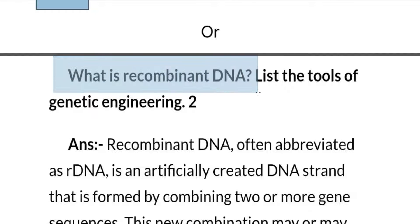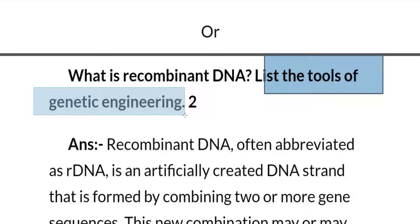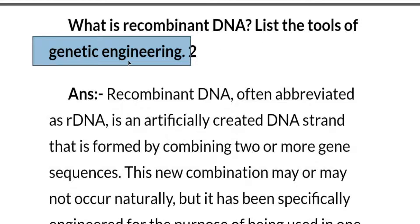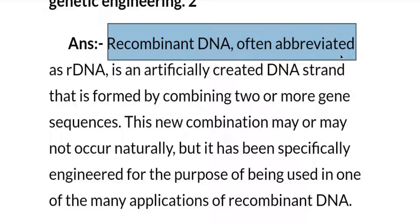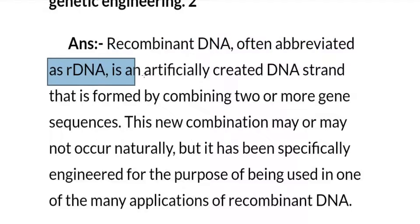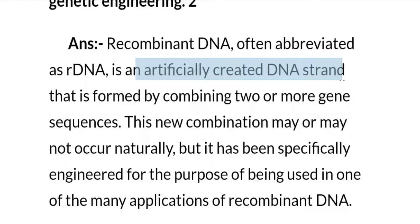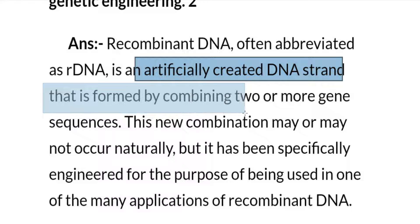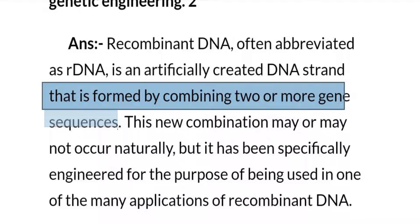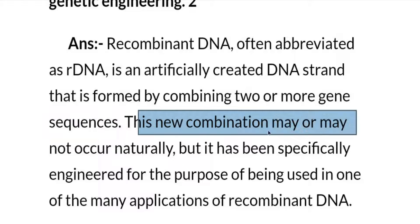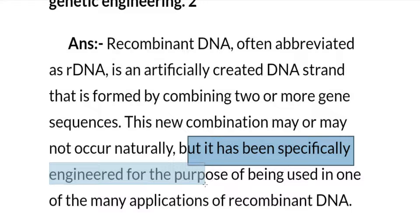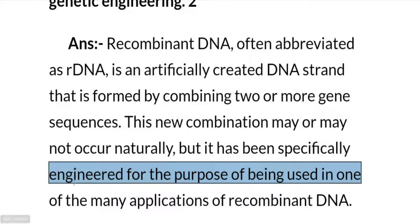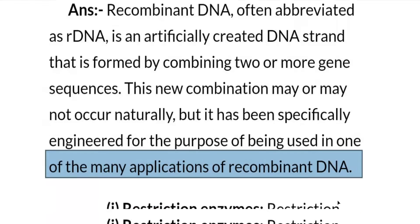What is recombinant DNA? Recombinant DNA, often abbreviated as rDNA, consists of artificially created DNA strands formed by combining two or more gene sequences. This new combination may or may not occur naturally, but it has been specially engineered for use in one of the many applications of recombinant DNA.